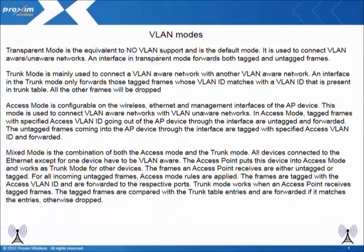The AP4000-700 supports the following VLAN Ethernet modes. Transparent mode is the equivalent of no VLAN support and is the default mode. It is used to connect VLAN-aware and VLAN-unaware networks. An interface in Transparent mode forwards both tagged and untagged frames. Trunk mode is mainly used to connect a VLAN-aware network with another VLAN-aware network. An interface in Trunk mode only forwards tagged frames whose VLAN ID matches with the VLAN ID present in the trunk table.